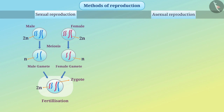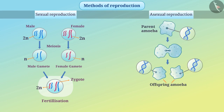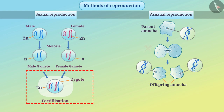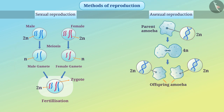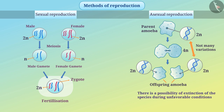In asexual reproduction, a replica of DNA is formed for the offspring. No male or female gametes are produced, and therefore there is no fertilization and no zygote. Both kinds of reproduction are similar in that the amount of DNA in offspring is similar to that of each parent. In asexual reproduction, offspring is formed from a single individual, so there are not many variations in the DNA. Due to this, there is a possibility of extinction of the species during unfavorable conditions.